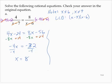Let's check our work. 4 over 8 minus 7, is this equal to 8 over 8 minus 6? 4 over 1 is 4. 8 over 2 is 4.